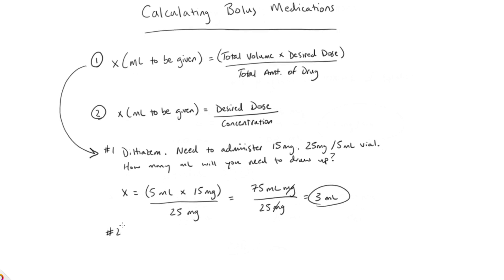In the second problem, we have a patient who needs amiodarone. We're asked to give 300 milligrams of that drug, and we're given a preload that has 450 milligrams inside 3 mLs of fluid. So the question is, how many mLs will you draw up, or how many mLs would you administer to give that 300 milligram dose?